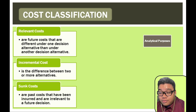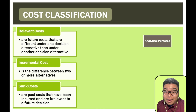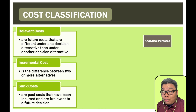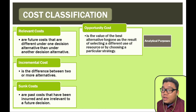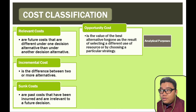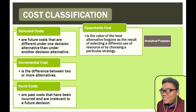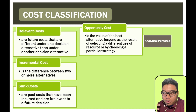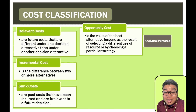Sunk costs are past costs that have already been incurred and are irrelevant from one decision to another. In the book example, the sunk cost is the original price of the old book at 500 pesos. Opportunity cost is the foregone value of the best alternative. For instance, if buying the old book requires spending an additional 50 pesos on lamination, that 50 pesos is an opportunity cost relative to the new book, since you would not incur it if you bought the new book instead.